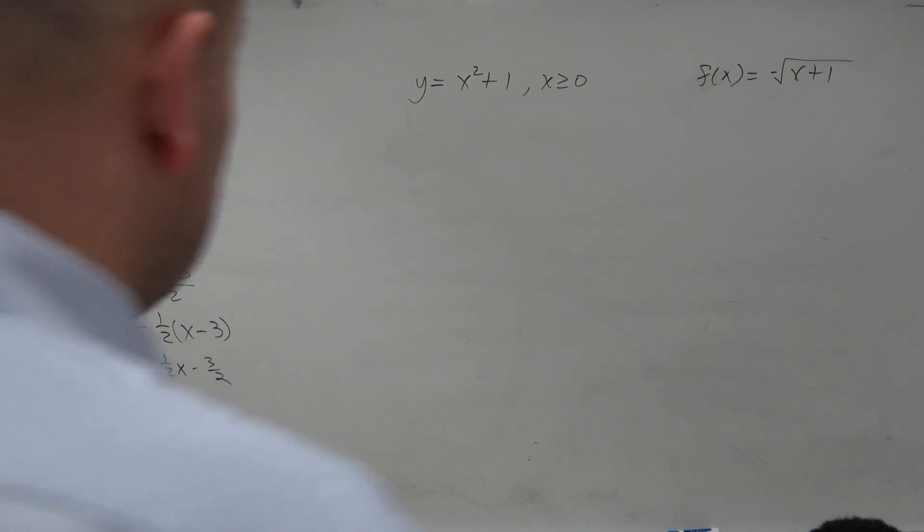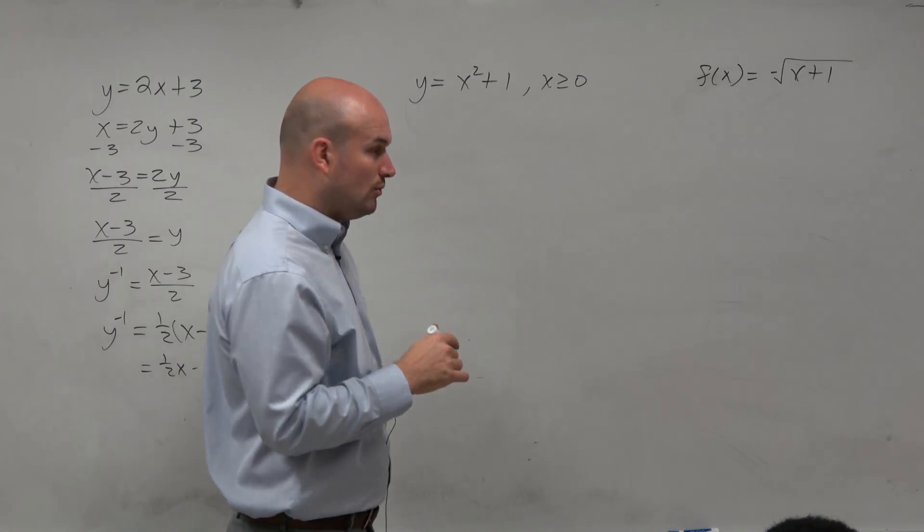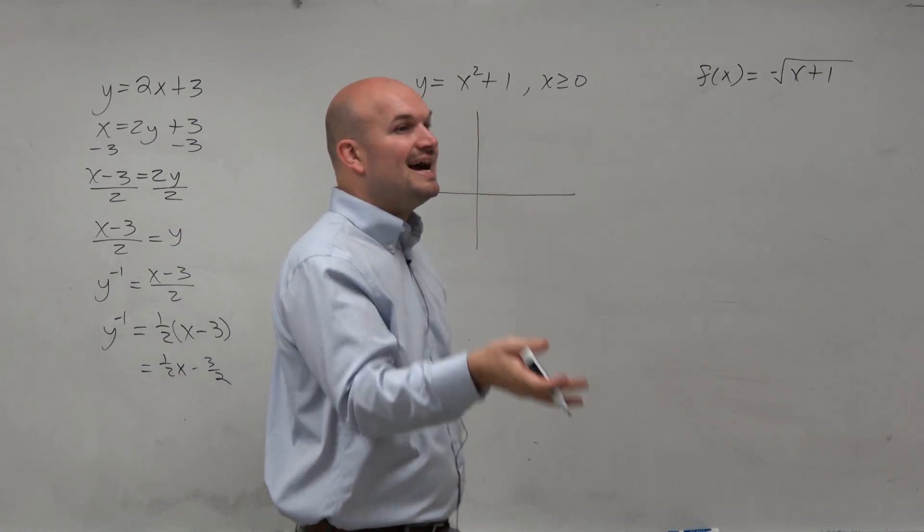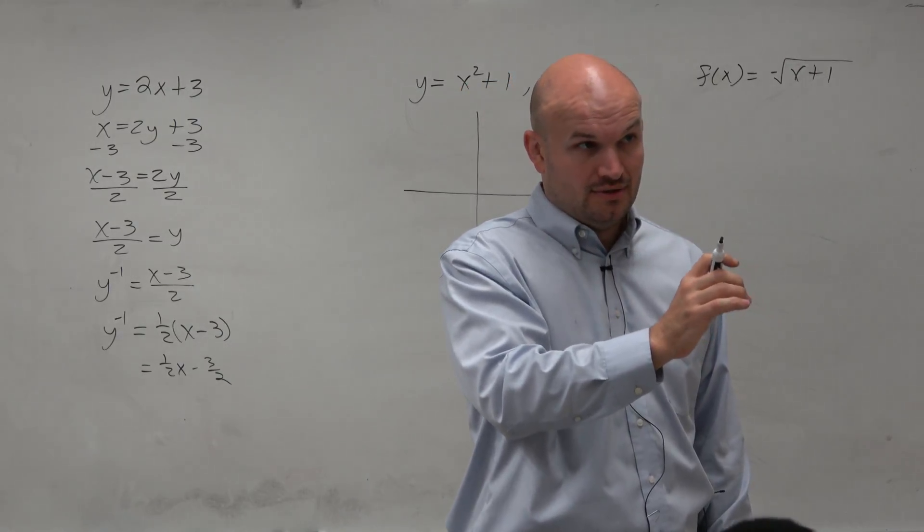So on this next example, again, we're trying to find the inverse. Now, I talked about 1 to 1. What 1 to 1 means is that for every x, there's exactly only 1 y. Only 1 y.